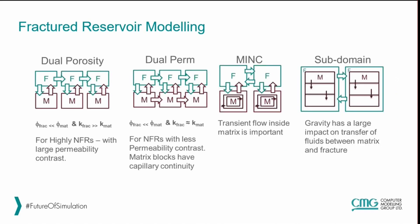The traditional way of modeling this would be through a dual continuous system, and we have a variety of different methods within CMG to model these. This can be the dual porosity method, dual permeability, MINC — which is multiple interacting continua — as well as subdomain methods. Each of these has a different area where it works better and has a few unique characteristics associated with it.